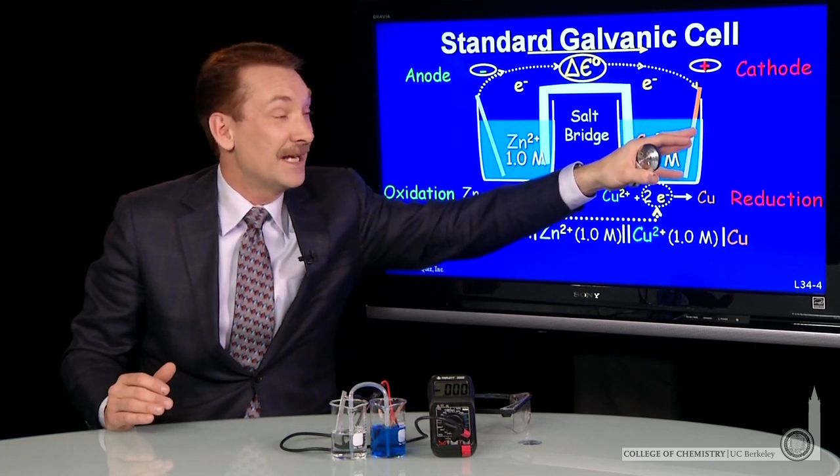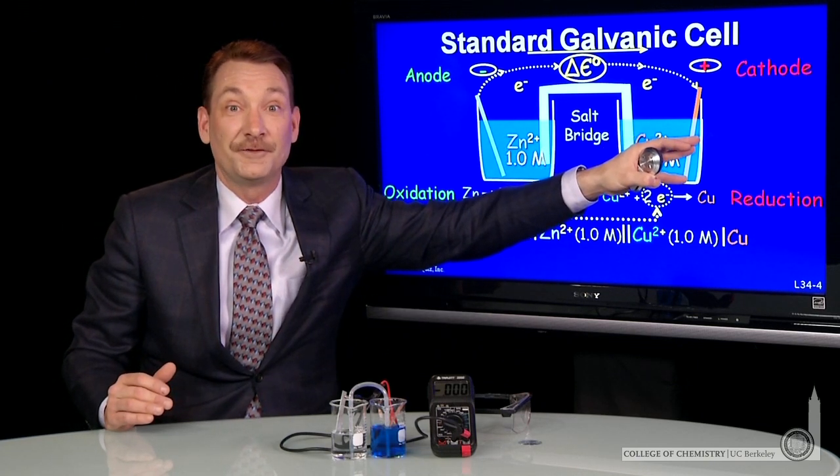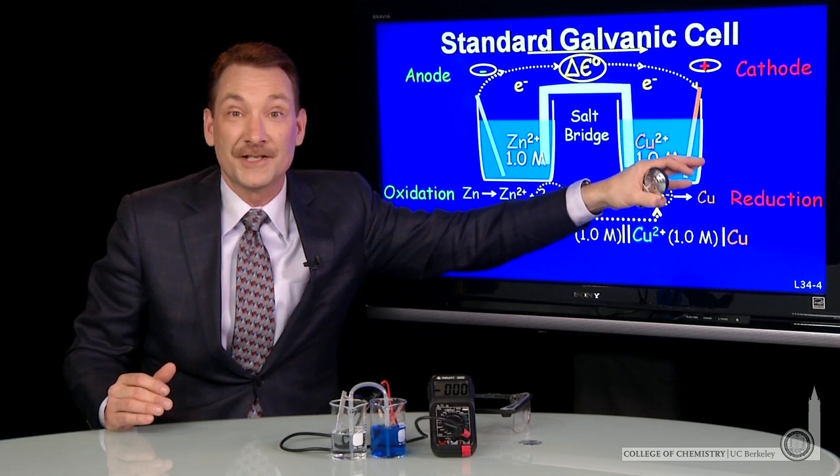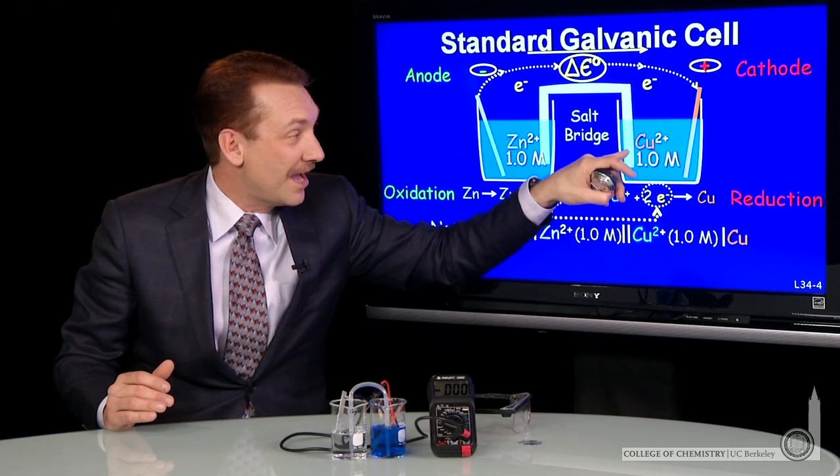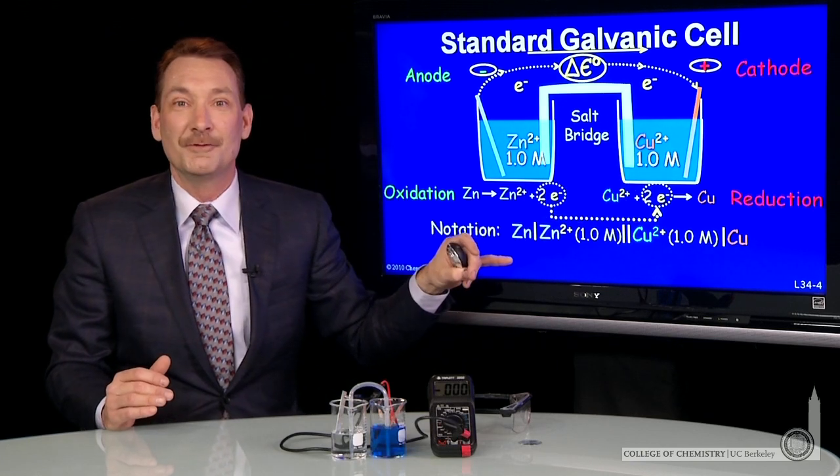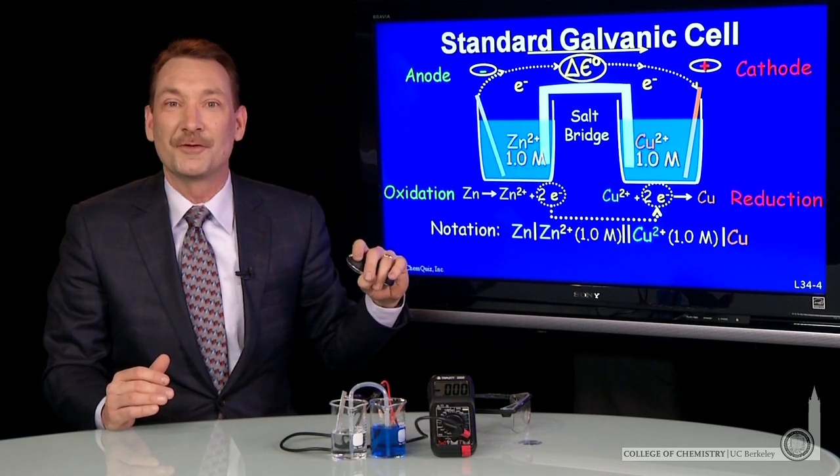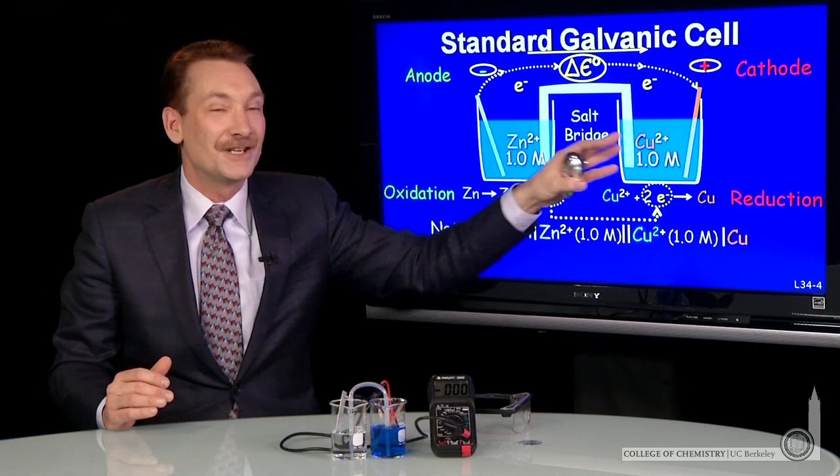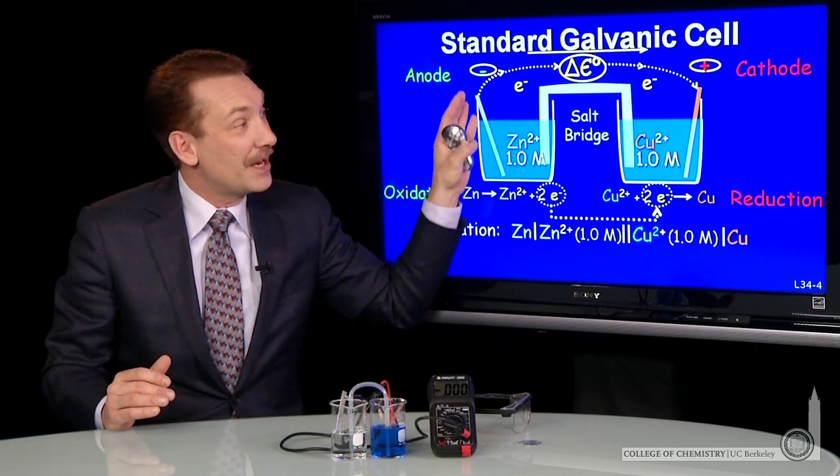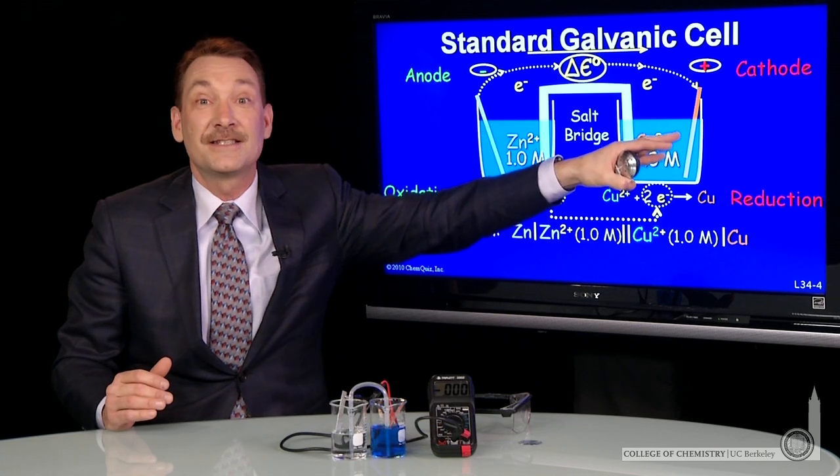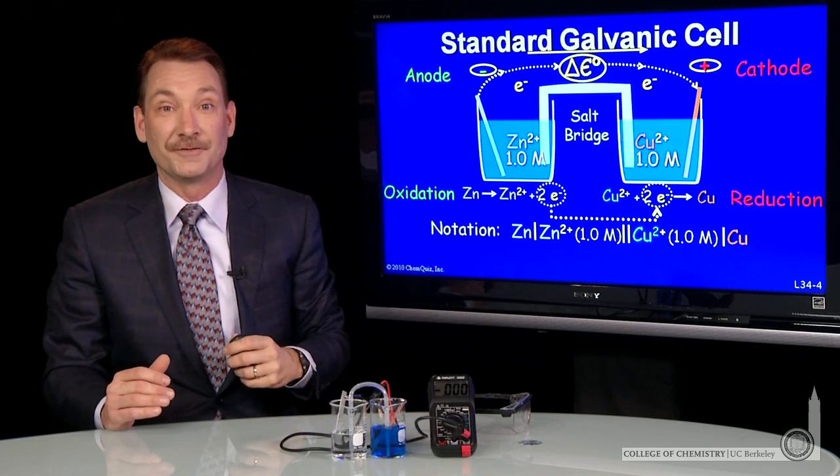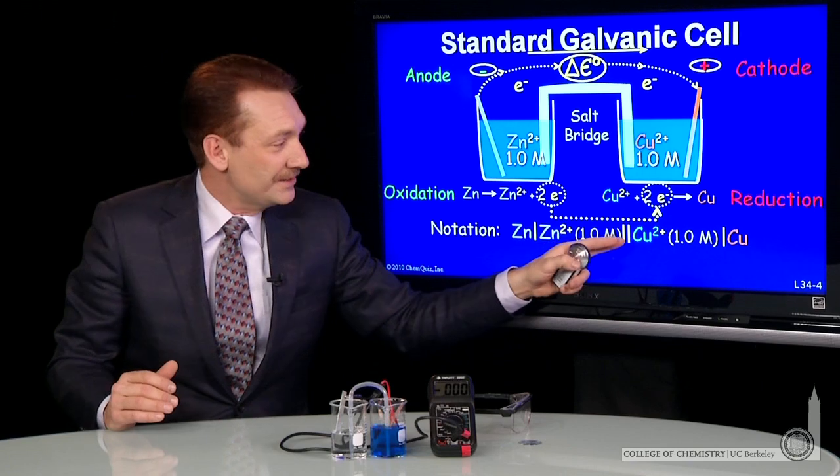So as negative electrons flow to this side and copper ions are removed from solution, we can have positive ions removed from this salt bridge and negative ions removed from the salt bridge here to maintain a charge balance so that a buildup of charge doesn't remove the potential for electrons to flow. So that's what our salt bridge does.